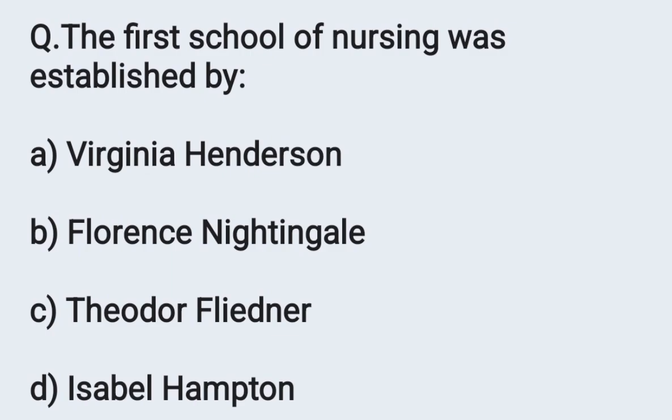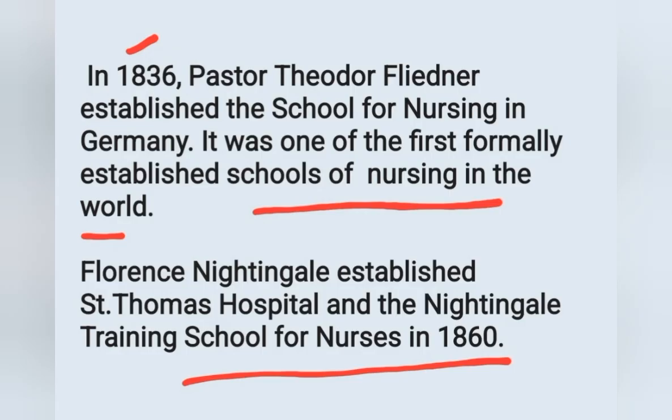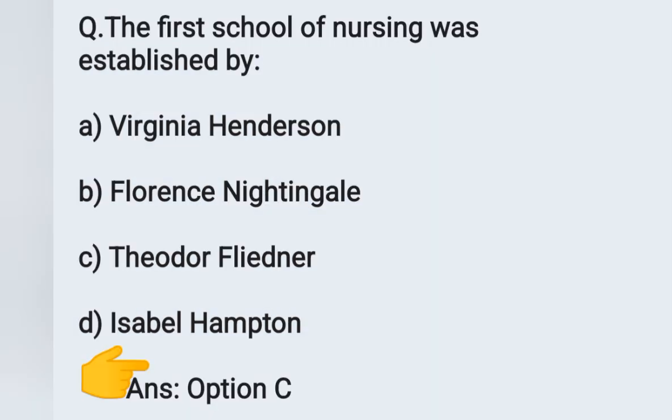First question: The first school of nursing was established by — option A: Virginia Henderson, option B: Florence Nightingale, option C: Theodore Fliedner, option D: Isabel Hampton. In 1836, Pastor Theodore Fliedner established a school for nursing in Germany, which was one of the first formally established schools of nursing in the world. Florence Nightingale established Saint Thomas Hospital and the Nightingale Training School for Nurses in 1860. The correct answer is option C, Theodore Fliedner.